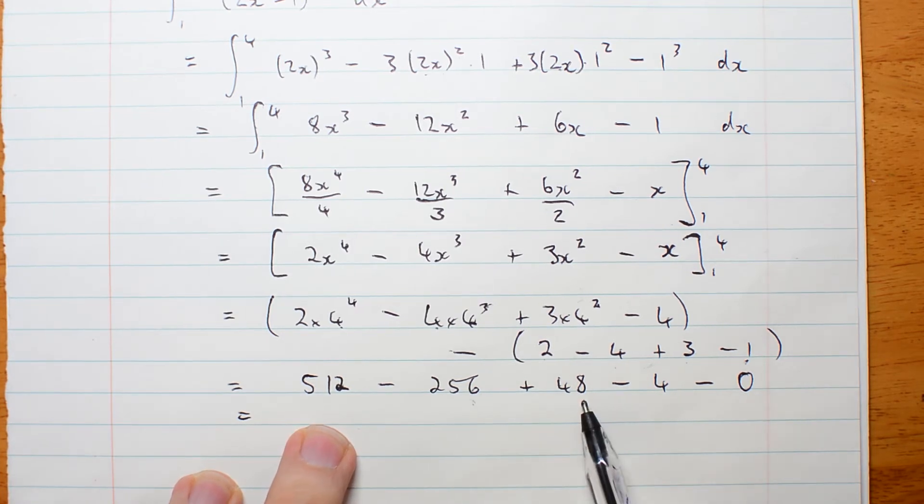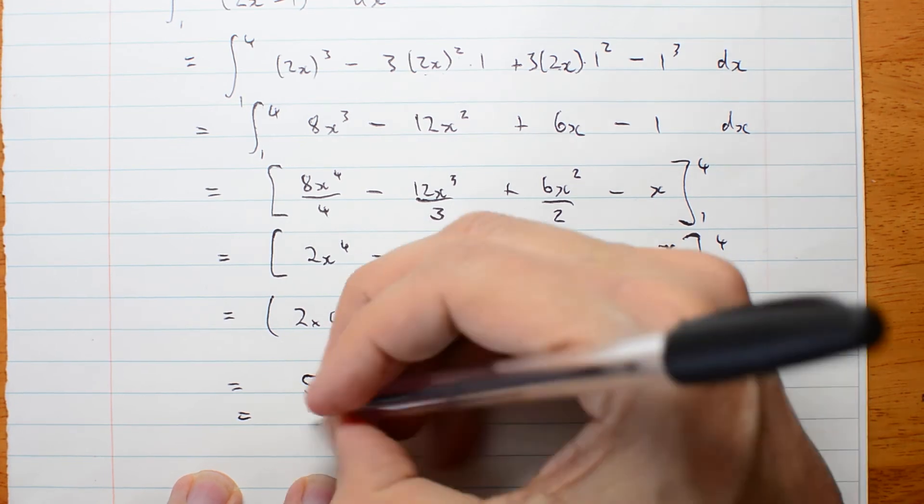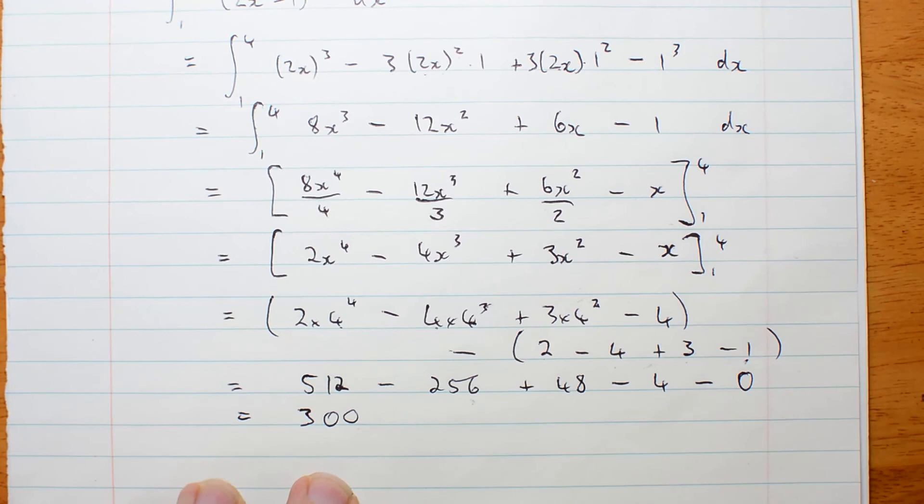512 take 256 is 256. 256 plus 48, or 256 plus 50 is 306. So plus 48 would be 304. Take 4 is 300. Wasn't that nice?